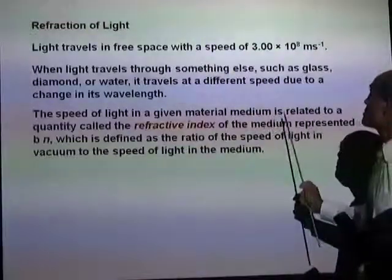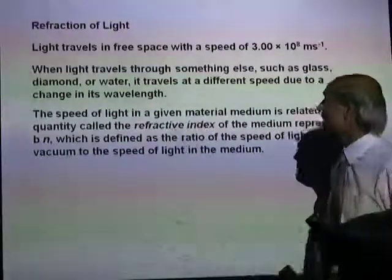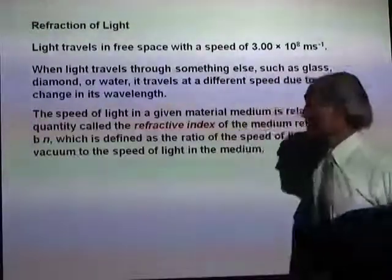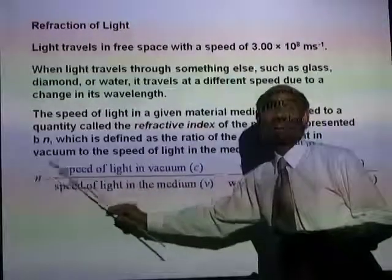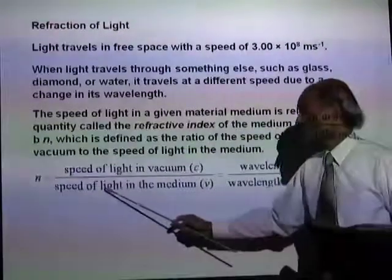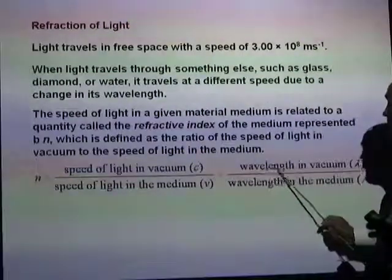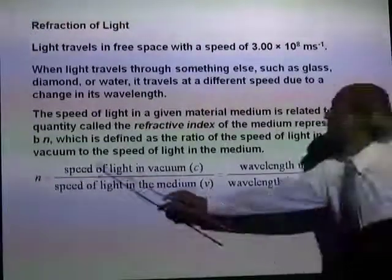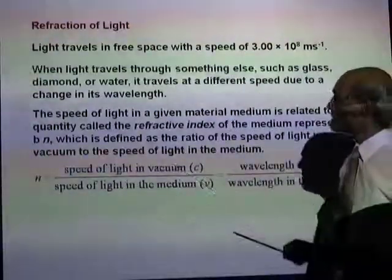The speed of light in a given material medium is related to a quantity called its refractive index, represented by lowercase N. The refractive index of the medium is defined as the speed of light in vacuum (C) divided by the speed of light in that medium, which is also the same as the wavelength of light in vacuum divided by the wavelength in the medium.